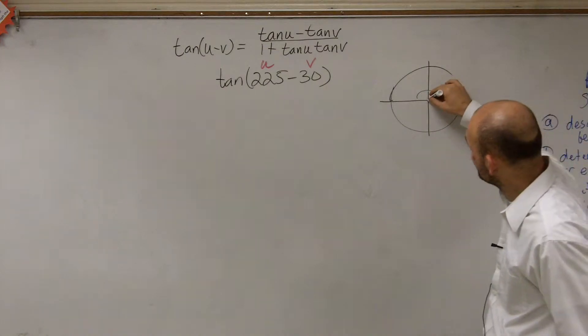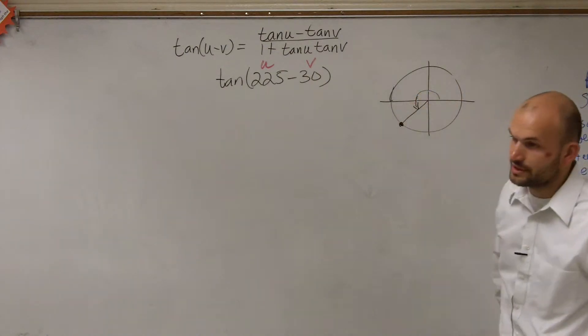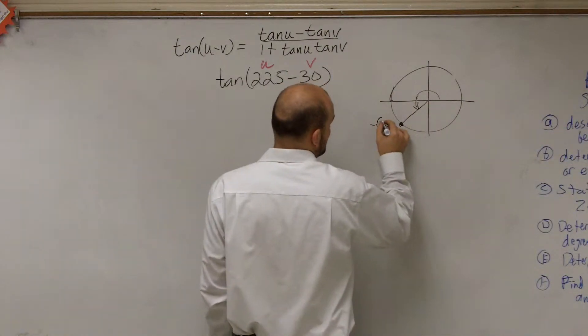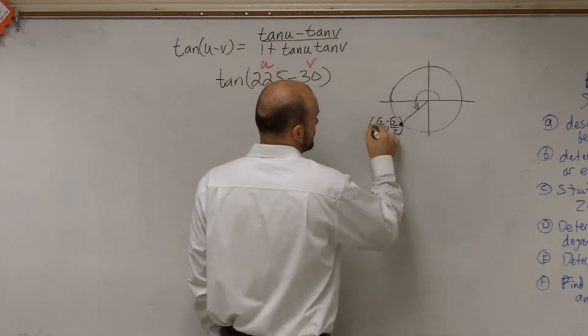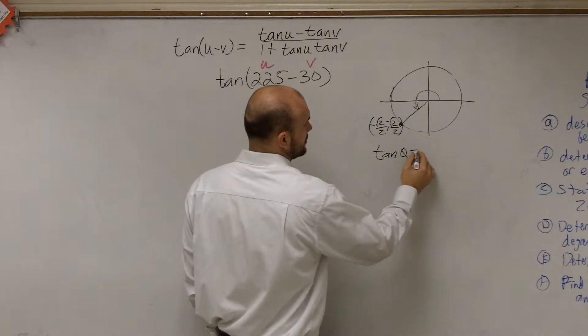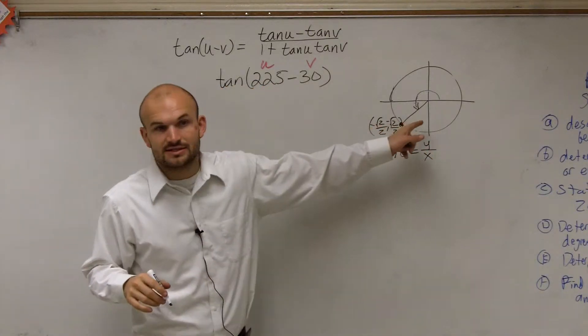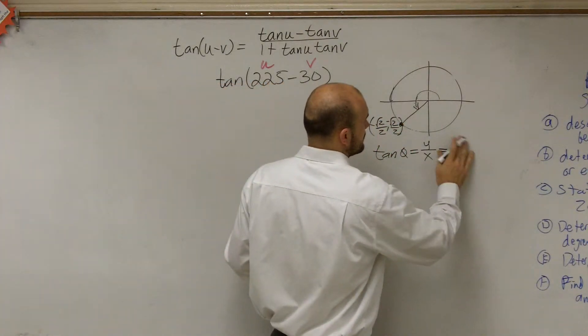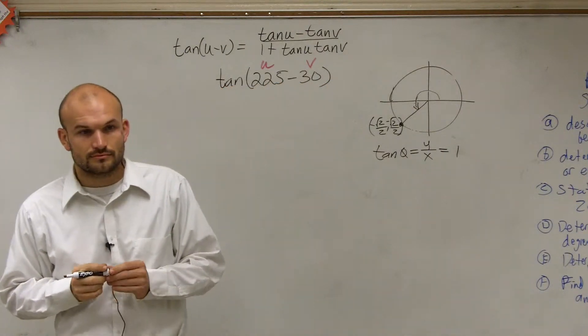This coordinate point is negative square root of 2 over 2, comma, negative square root of 2 over 2. Now remember, the tangent of an angle is equal to your y over your x. So we look at this, and since we have y over our x in this point, we know that our answer is going to be not 1 over 1, but equal to 1.